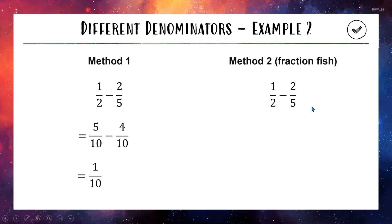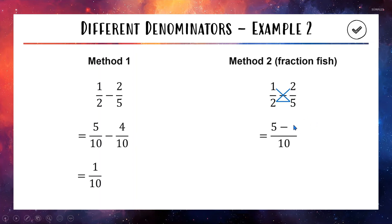Using the fraction fish for Method 2: draw the fish shape over the fractions. First the face: 2 times 5 is 10 on the bottom. Next line: 5 times 1 is 5 for the top left. We had a minus, so we write minus. Then 2 times 2 is 4. Tidying up: 5 minus 4 is 1 out of 10 — the same answer either way. Use whichever method you prefer.